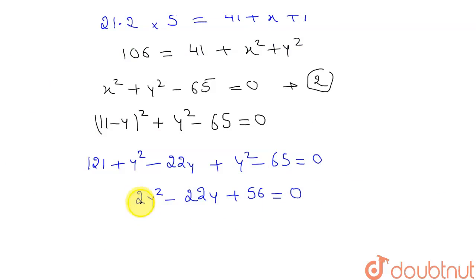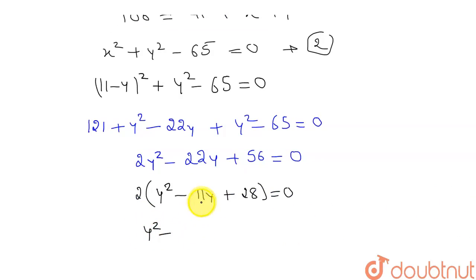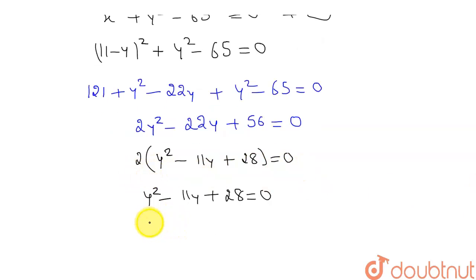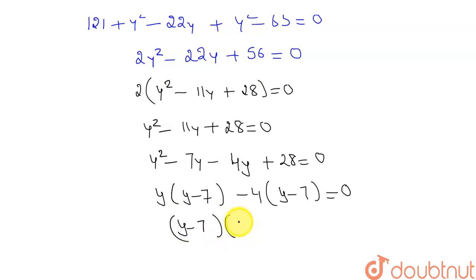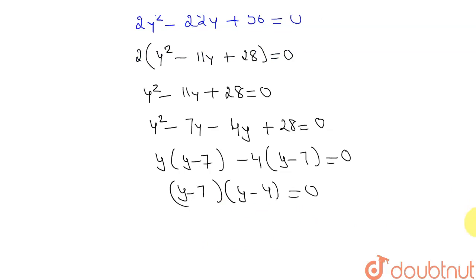Taking two as common and dividing both sides by two: y squared minus 11y plus 28 equals zero. Factorizing: y squared minus 7y minus 4y plus 28 equals zero. Taking y common from the first pair and minus four from the second: y(y minus 7) minus 4(y minus 7) equals zero. So (y minus 7)(y minus 4) equals zero, giving y equals 7 or y equals 4.